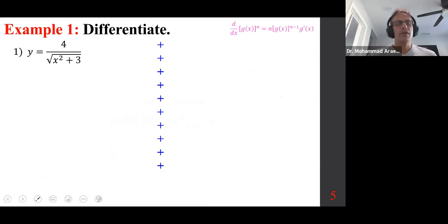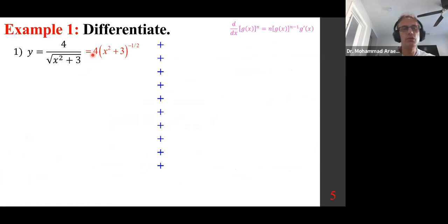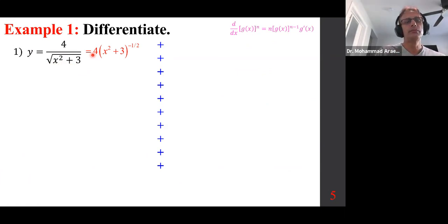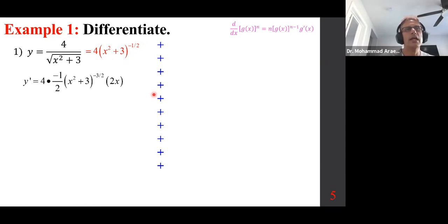Let's refresh everyone's memory about differentiation. The very first step is to bring this up, writing it as (x² + 3) to the power of one half. The one half comes up and becomes negative one half. Could we use the quotient rule? Yes, but no need to. So four times negative one half, then the same thing to the power of minus one half minus one, by the chain rule times the derivative of the parentheses, which is 2x. And this is the end of the calculus step.